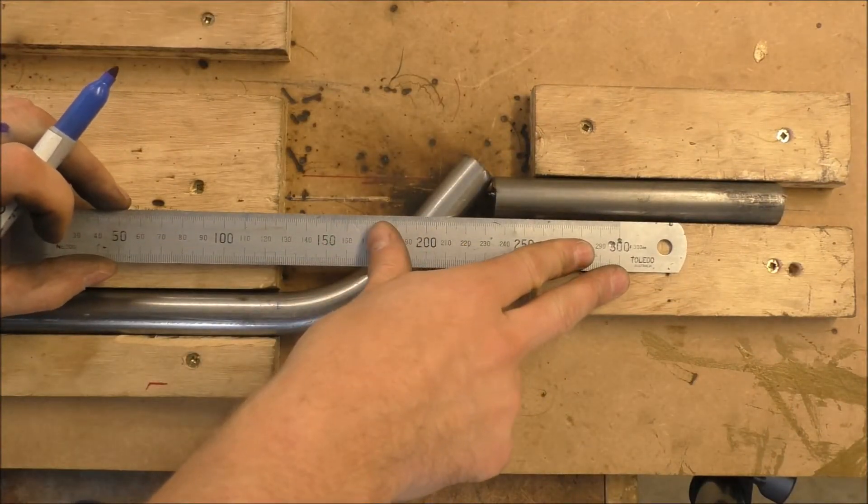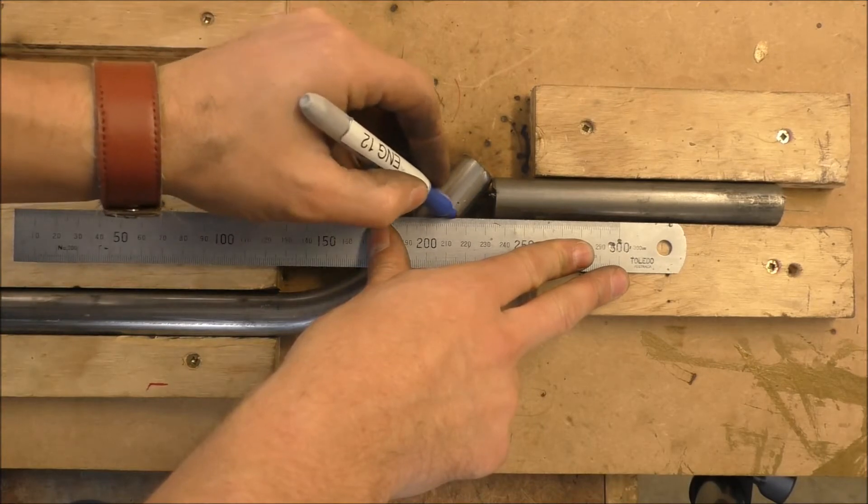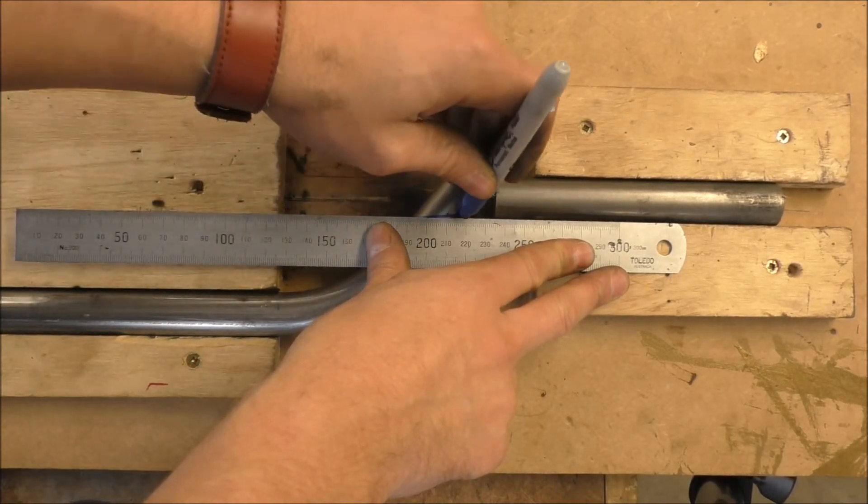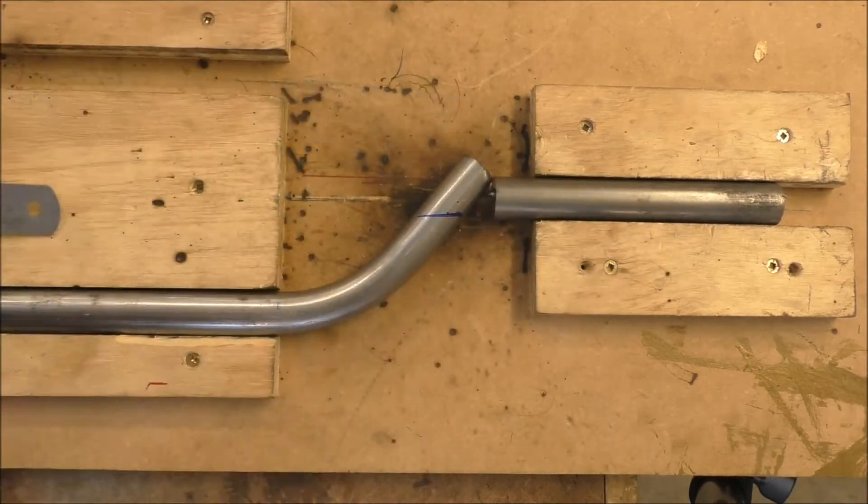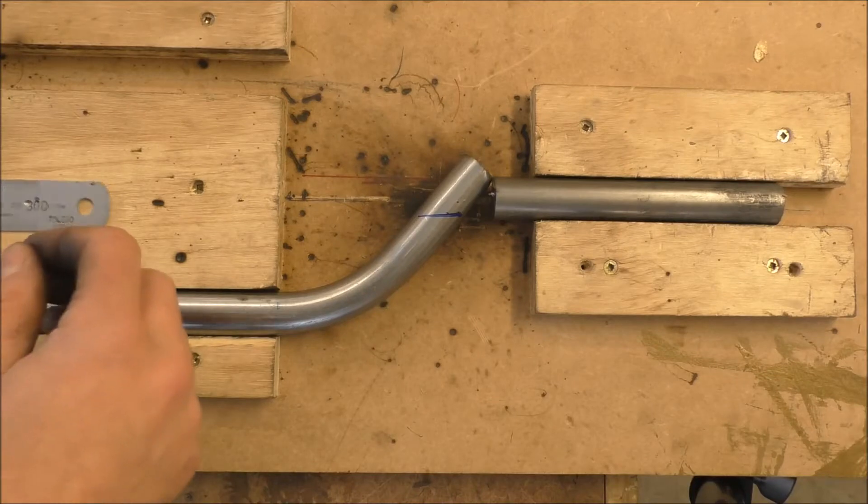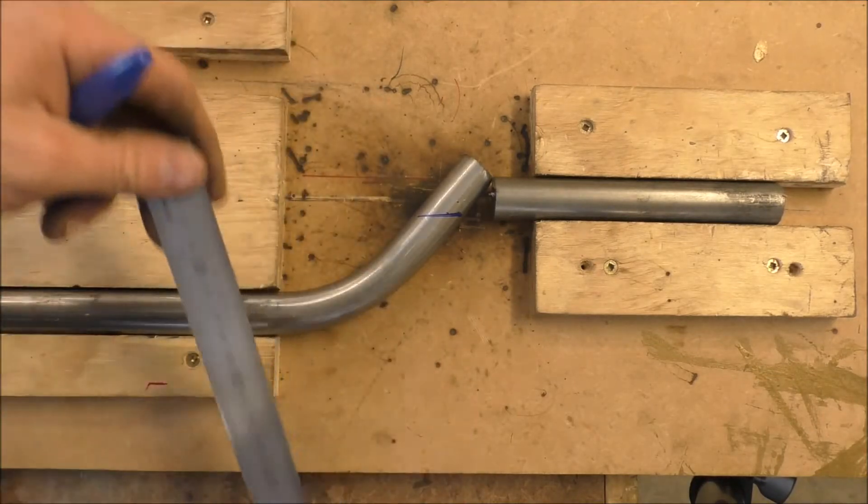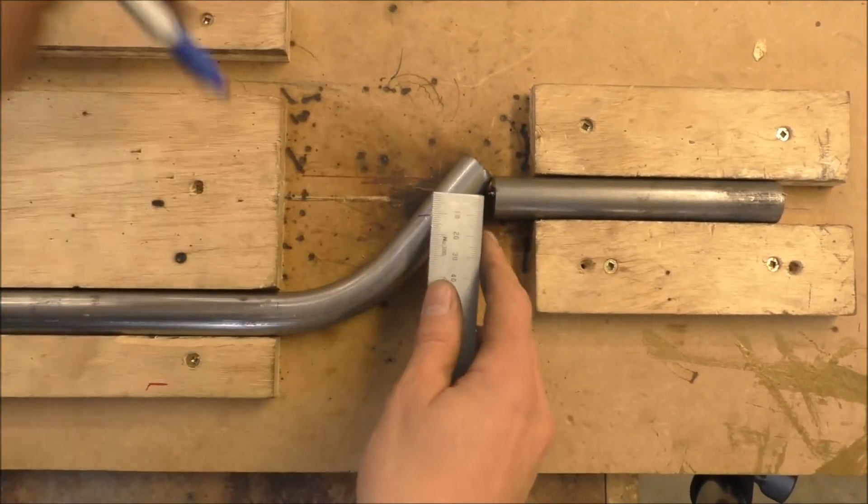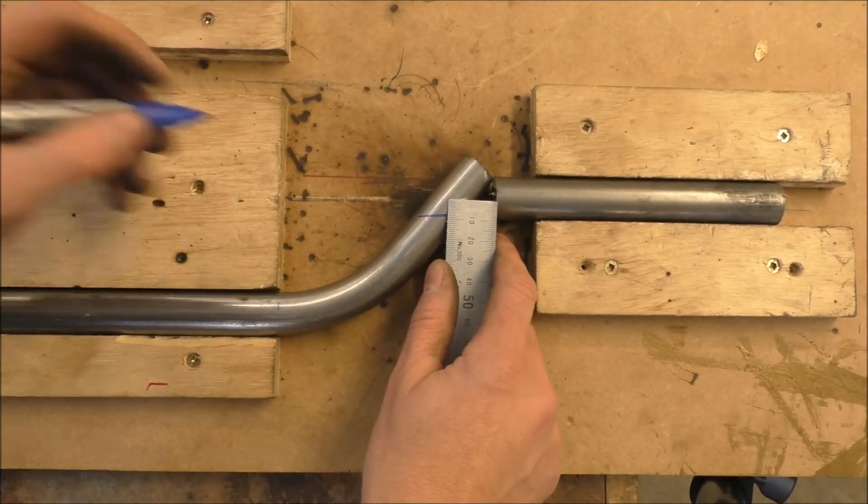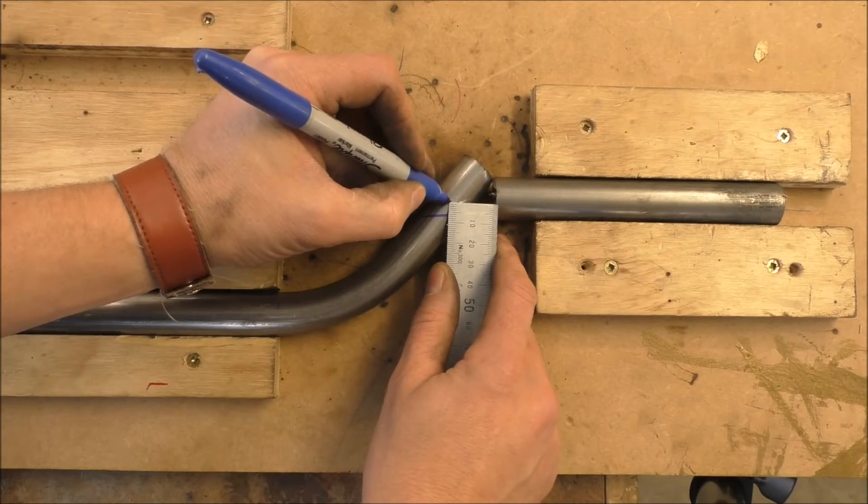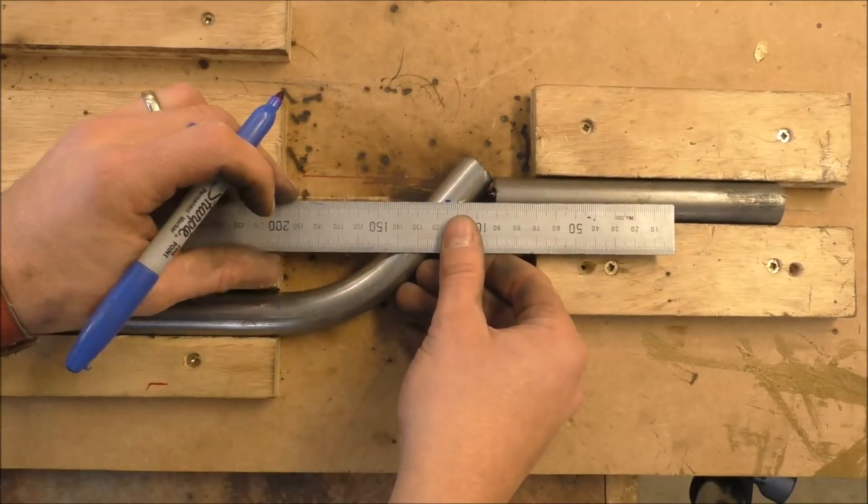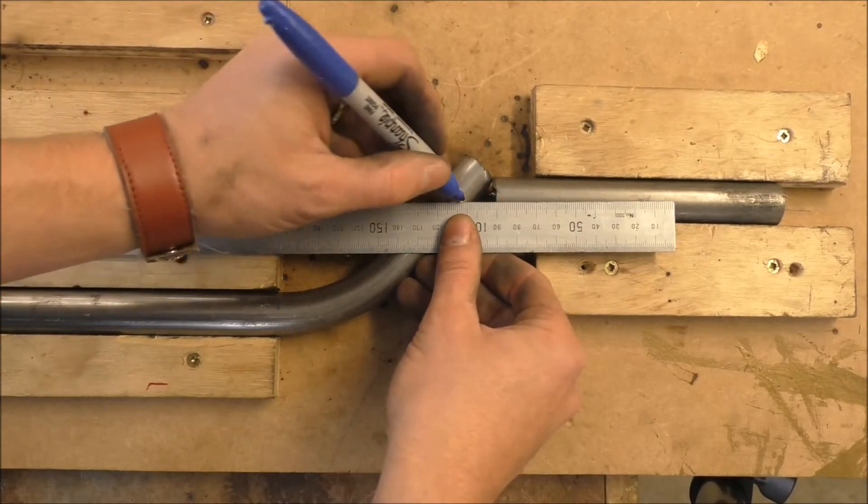A simple way of doing that is to put a mark on this side here, and that gives us our parallel line. But if we just cut it there, it's going to have some great big gaps. So what we want to do is measure in one third of the diameter in from the edge.